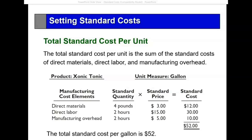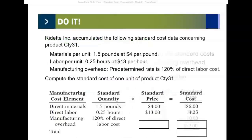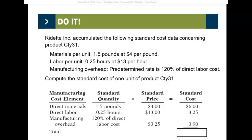We have devised that the total standard cost for one unit — in this case a gallon — is $52. And we can assign the overhead based on a percentage of direct labor costs.